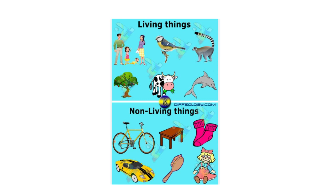Now let's take a look at the non-living things. We have a bicycle, a table, a pair of socks, a car toy, a brush and a doll. Do these things breathe? No. Do these things eat? No. Do these things grow? No. Do these things reproduce? No. So we call these things non-living things.